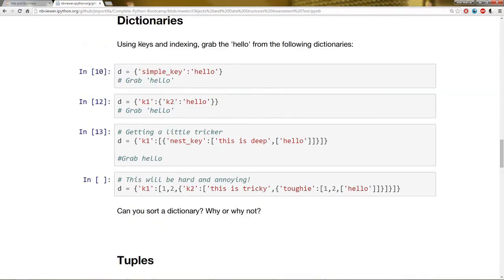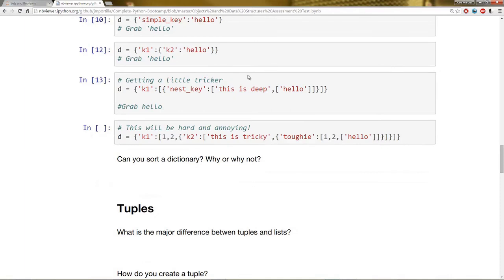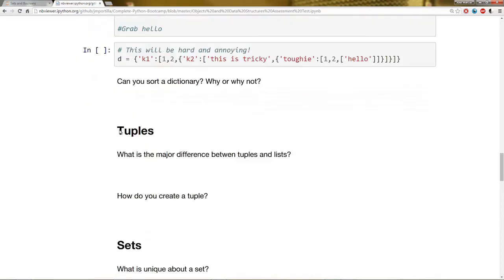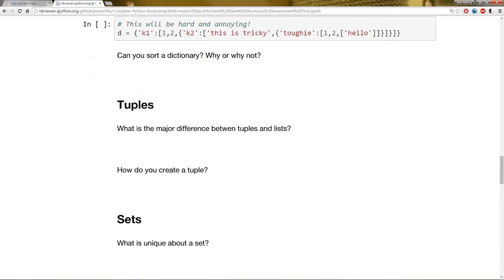Moving on, we'll have dictionaries. Using keys and indexing, grab hello from the following dictionaries. This is going to get progressively harder and harder. So I want you to use keys and index calls with brackets to grab hello out of this dictionary, then out of this dictionary, then out of that dictionary, and then out of this dictionary. So you notice the nesting gets harder and harder. Then I want you to answer the question, can you sort a dictionary? Why or why not?